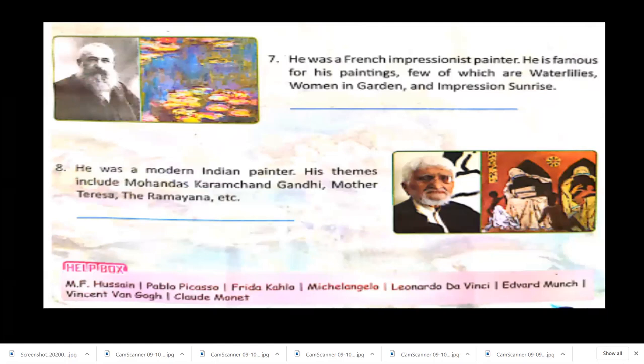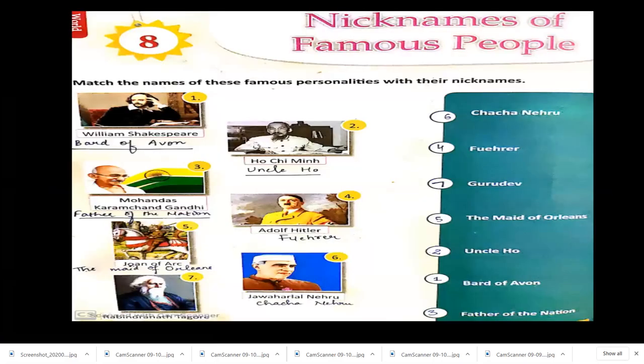The last of our greatest painters is a modern Indian painter whose themes include Mohandas Karamchand Gandhi, Mother Teresa, and the Ramayana. His name is M.F. Husain.